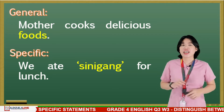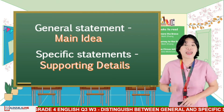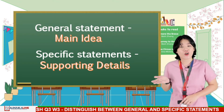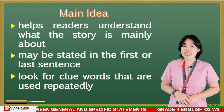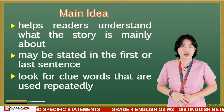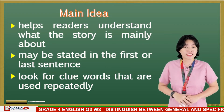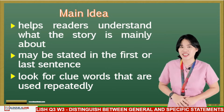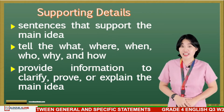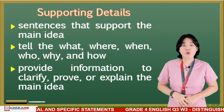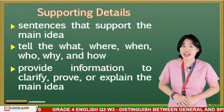Now, learners, in a paragraph or story, the general statement or information we talked about can also be called main idea, while the specific statements are called supporting details. A main idea helps readers understand what the story is mainly about. It may be stated in the first or last sentence. To find the main idea, read the entire paragraph first, then look for clue words that are used repeatedly. On the other hand, supporting details are sentences that support the main idea. They tell the what, where, when, who, why, and how of events, and also provide information to clarify, prove, or explain the main idea.